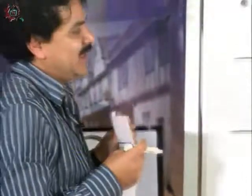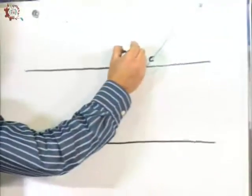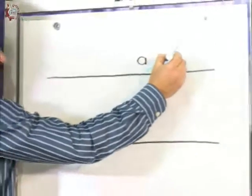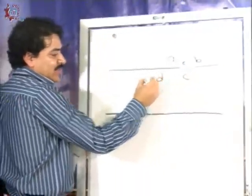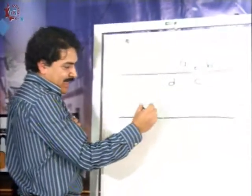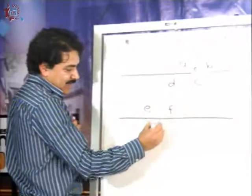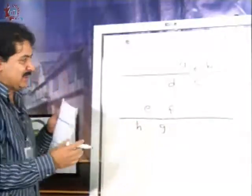Les vamos a dar un nombre. Este ángulo que se forma aquí será nuestro ángulo A. El ángulo que se forma aquí, el ángulo B, C, y el ángulo D. Continuamos con los ángulos de abajo: E, F, G, y ángulo H.